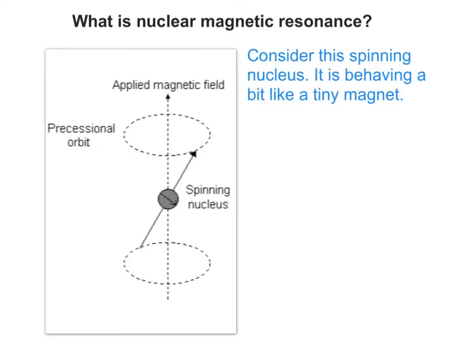If we look at this animation, it shows a nucleus spinning in a magnetic field. Therefore, the nucleus itself must be behaving like a tiny magnet.